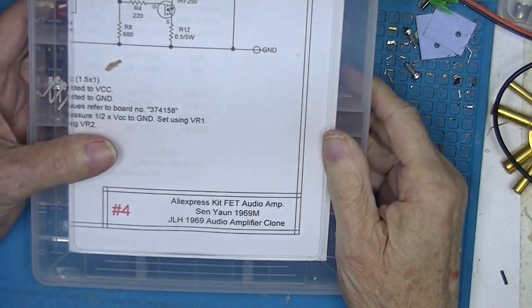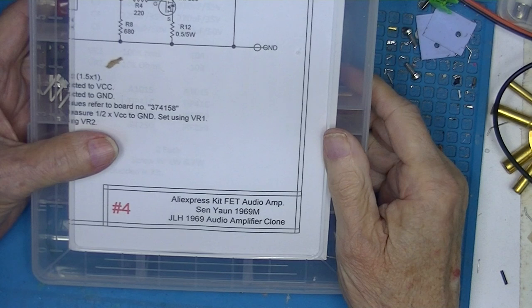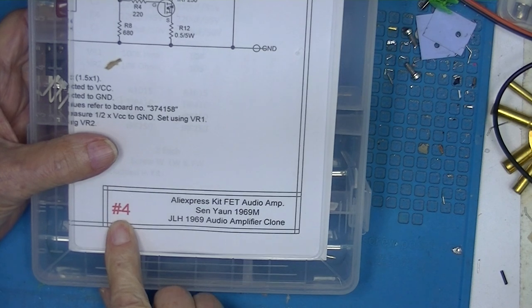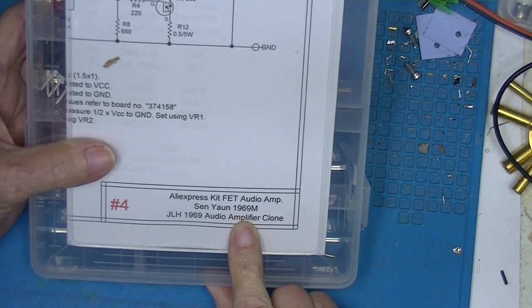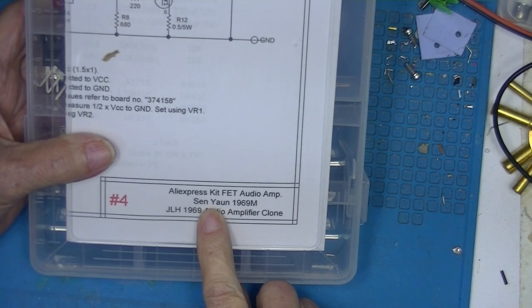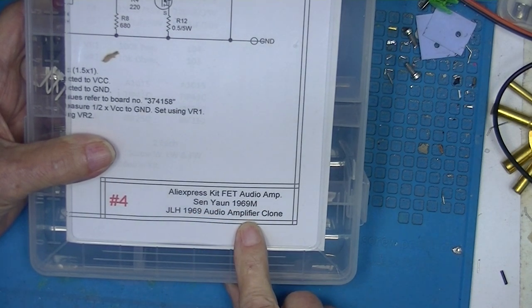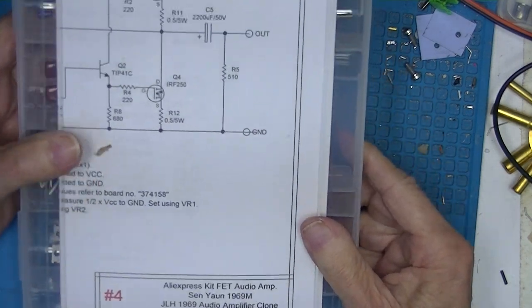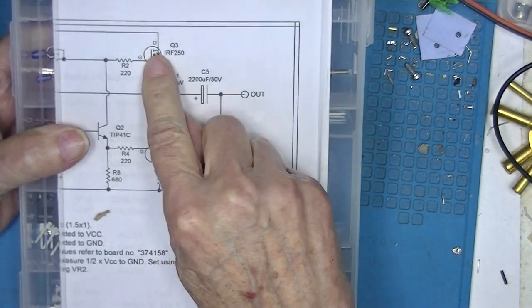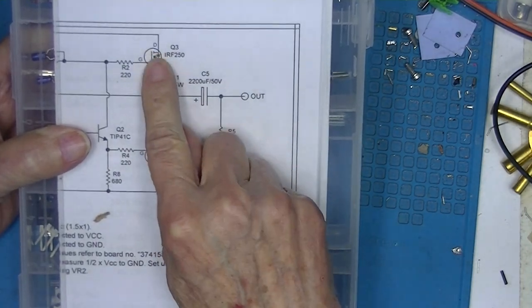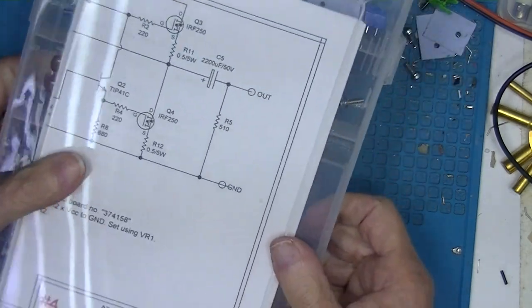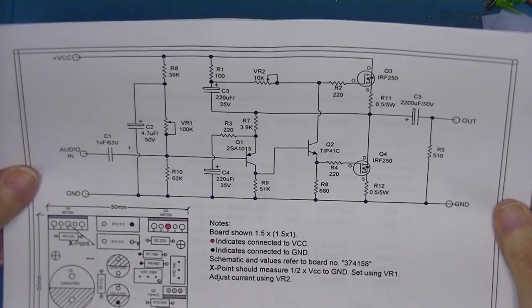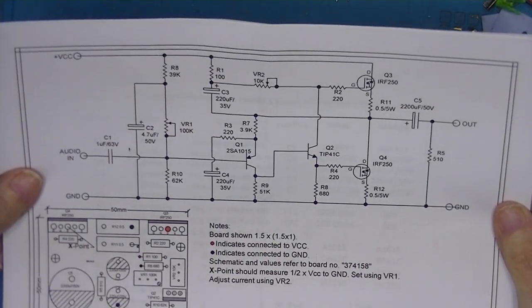This will be a 1969 amplifier, my version 4. It's an AliExpress kit. This one will not strictly be a JLH 1969 because at least two of the transistors are FETs.